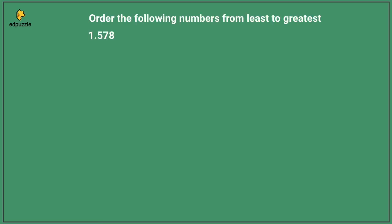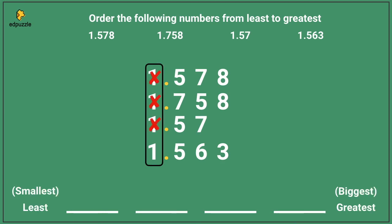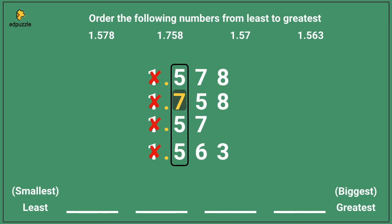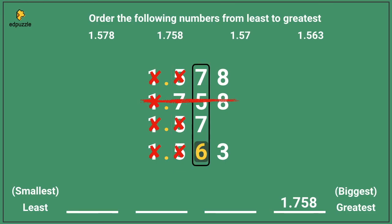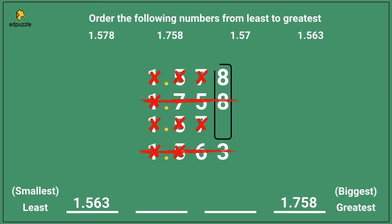Now it's time for you to practice on your own. Order the following from least to greatest: 1.578, 1.758, 1.57, and 1.563. If you stack these numbers, the 1s are the same, but in the next place value, the 7 is larger than the 5s, so 1.758 is the largest number. Next, 6 is smaller than the 7s, so 1.563 is the smallest. Then, when we add a placeholder 0 to 1.57, we can compare the 8 to the 0 and see that 1.578 is bigger. So the correct order is 1.563, 1.57, 1.578, and then 1.758.